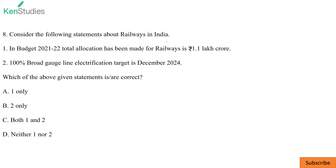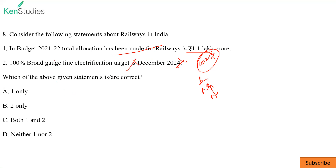Question eight: statements about railways in India. In Budget 2021-22, total allocation for railways is ₹1.1 lakh crore — correct. The 100% broad gauge line electrification target is December 2023, not 2024 — so the second statement is wrong. Railways in India are of three types: broad gauge, meter gauge, and narrow gauge. So the first is correct and second is wrong. Answer is A.